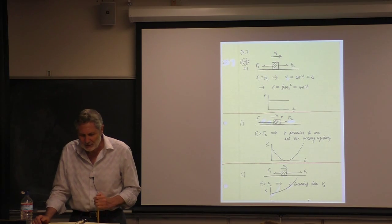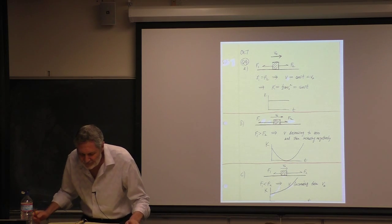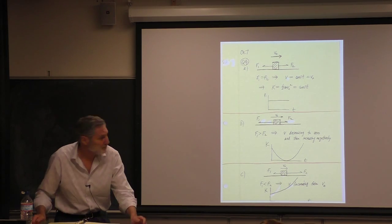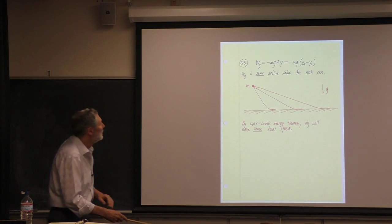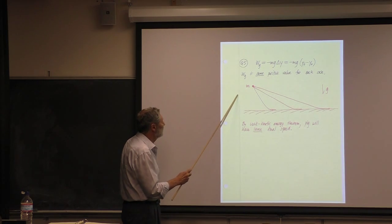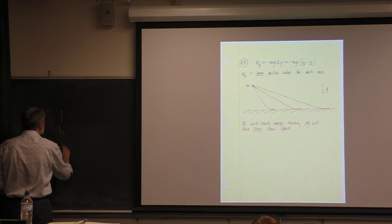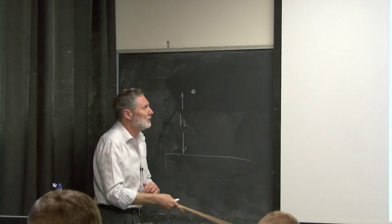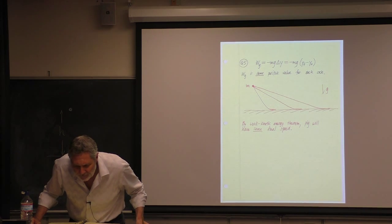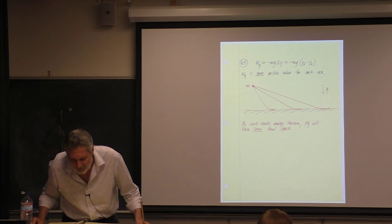The next one is the famous greased pig question — this goes way back. There's an object at the top of three different frictionless ramps. They all bottom out at the same height H. We want to rank each of the three slides — A, B, and C — according to the work done by the gravitational force.